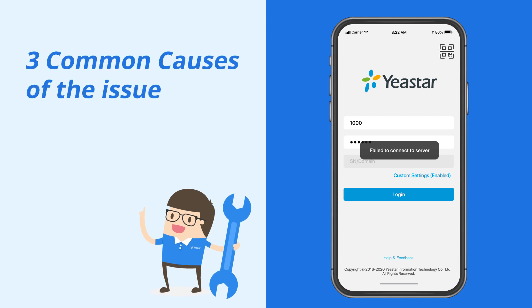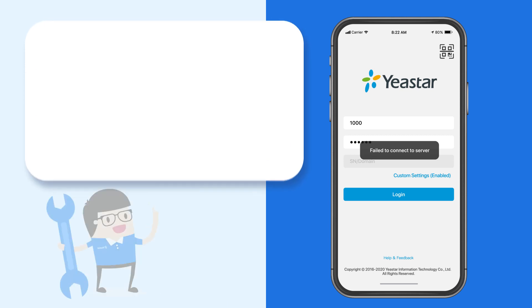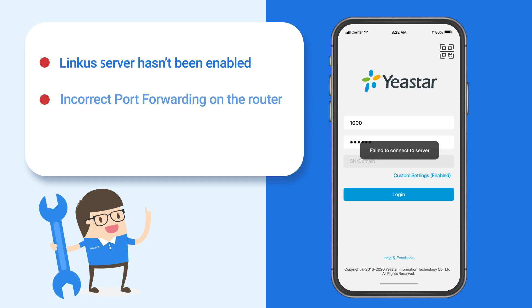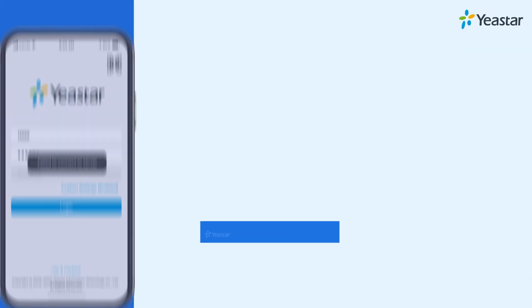Basically, there are three common causes. The first one: Linkus server hasn't been enabled. The second one: incorrect port forwarding on the router. The last one: logging in via an IPv6 network.